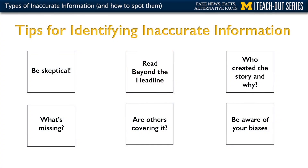The fourth tip is to think about what's missing. If you read an article, think to yourself: is there another side to the story? What types of information would be needed to make the story complete? Who would this article need to talk to in order to get the other side? Think about whether the story is one-sided and what might actually be missing.